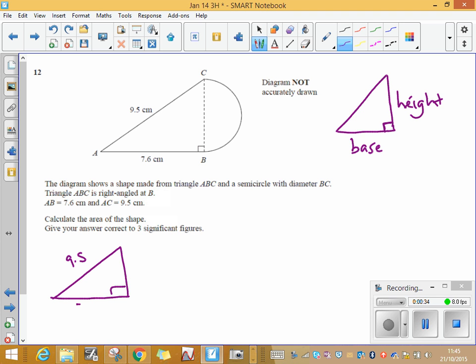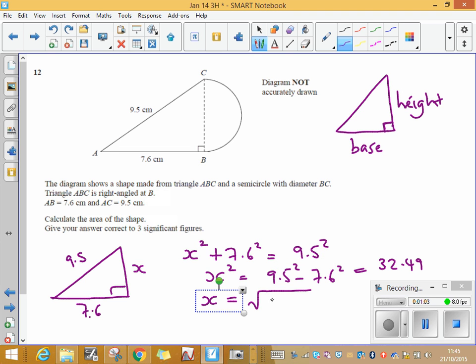So if that's 9.5, that's 7.6, this side is the side that I want. Pythagoras's theorem says that x squared plus 7.6 squared is going to equal the hypotenuse squared which is 9.5 squared. So x squared is going to be 9.5 squared minus 7.6 squared and that comes out as 32.49, which means that the height of this triangle is the square root of 32.49 and that comes out as 5.7 centimetres exactly.